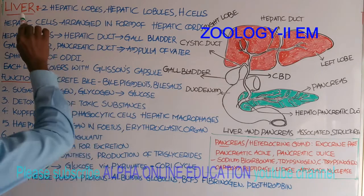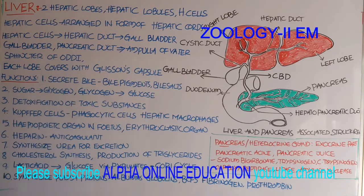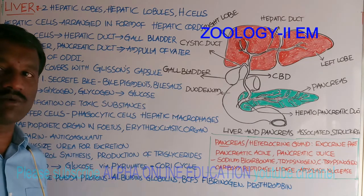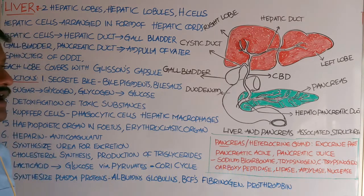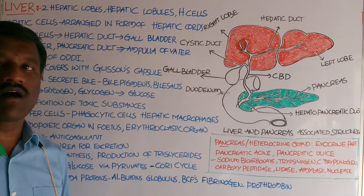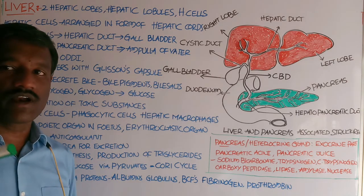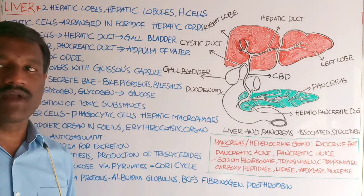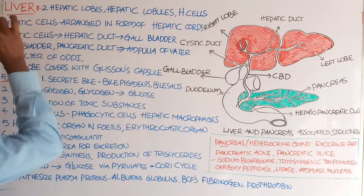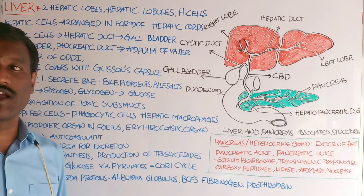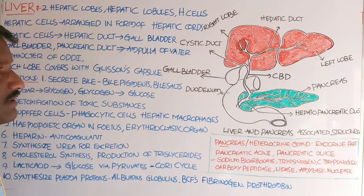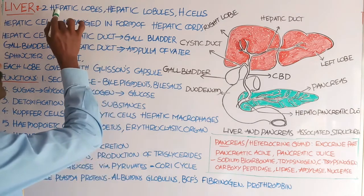Now let's discuss the liver in human beings. The liver is the largest gland in the human body. It is situated in the upper right abdominal cavity. The liver weighs about 1.5 kg in human beings.